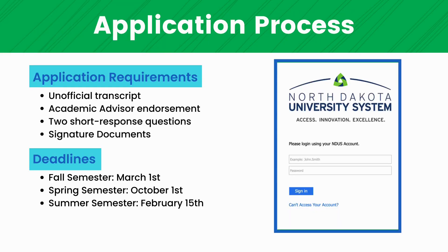Let's walk through the application process and highlight key deadlines. To apply, you'll use your study abroad profile. The application is a two-step journey: first, apply through UND via your study abroad profile, then directly to your chosen host program. For the UND application, you'll need a copy of your unofficial transcript downloaded from campus connection, an academic advisor endorsement, responses to two brief short-response questions, and signature documents to review once accepted. Important deadlines: fall semester applications are due March 1st, spring semester by October 1st, and summer by February 15th. Applications typically open two to three months before the deadline — remember, you don't need an open application to start exploring study abroad options.